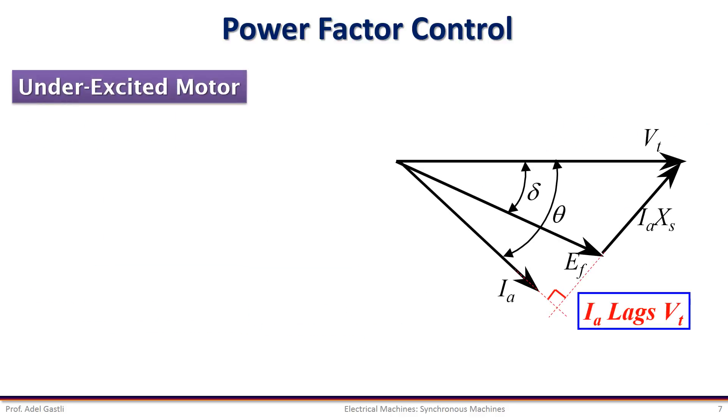For the case of under-excitation, the field current is decreased and adjusted, such as EF cosine delta is smaller than the terminal voltage VT. In this case, we have a lagging power factor, as shown by this phasor diagram.